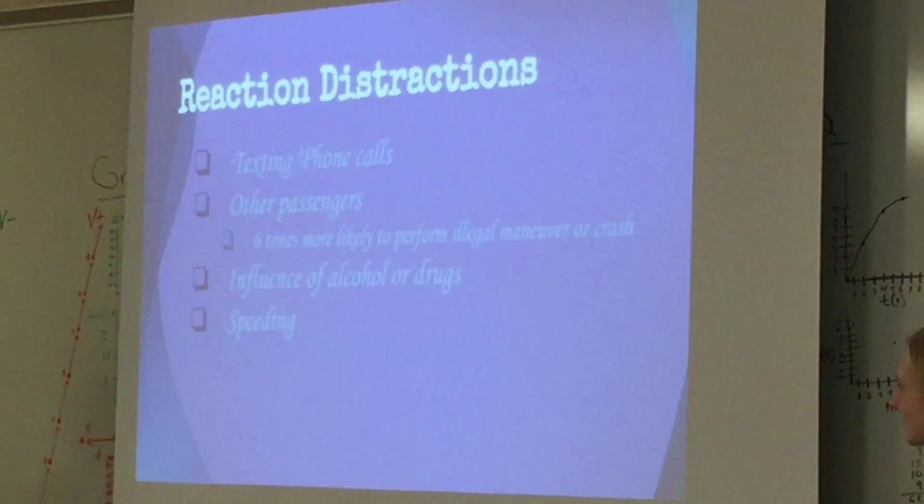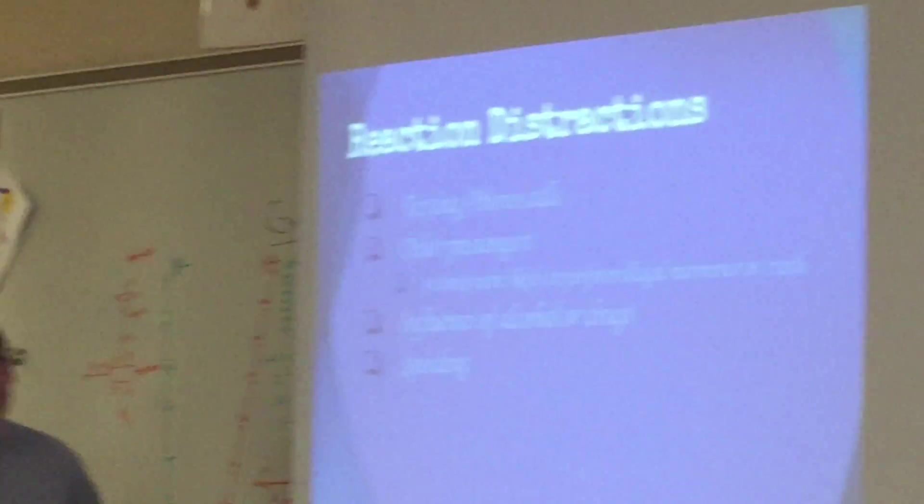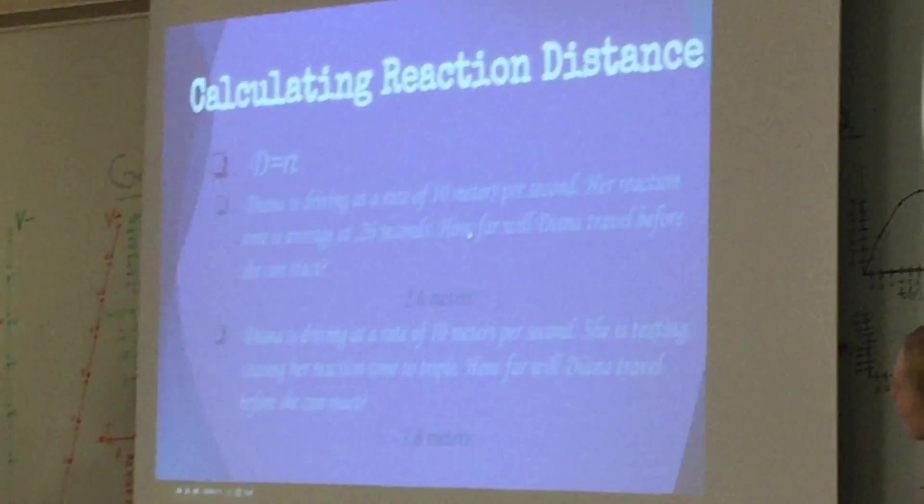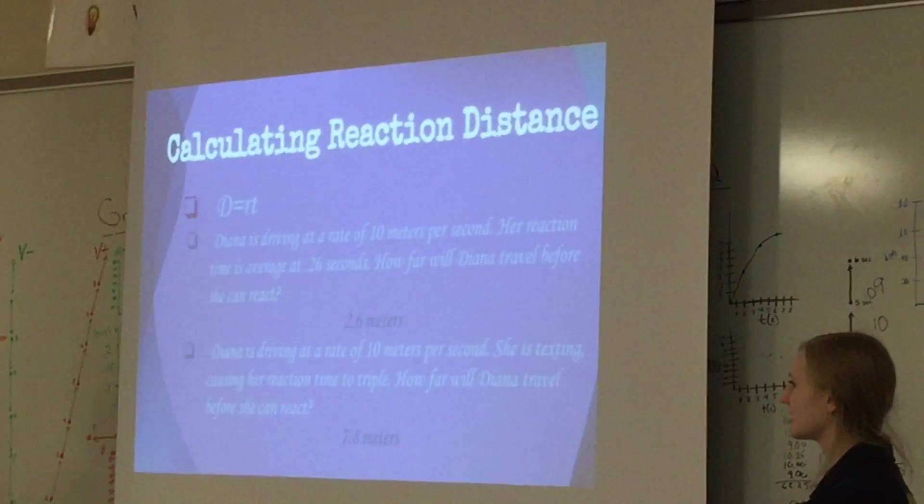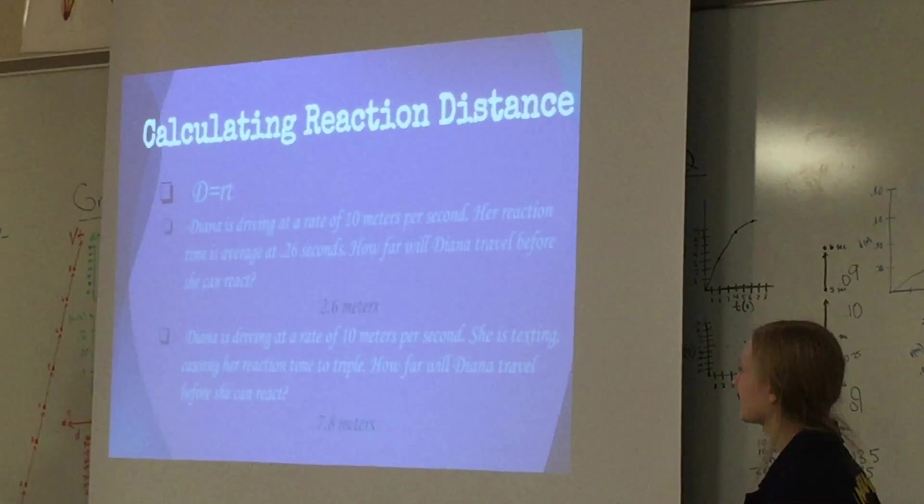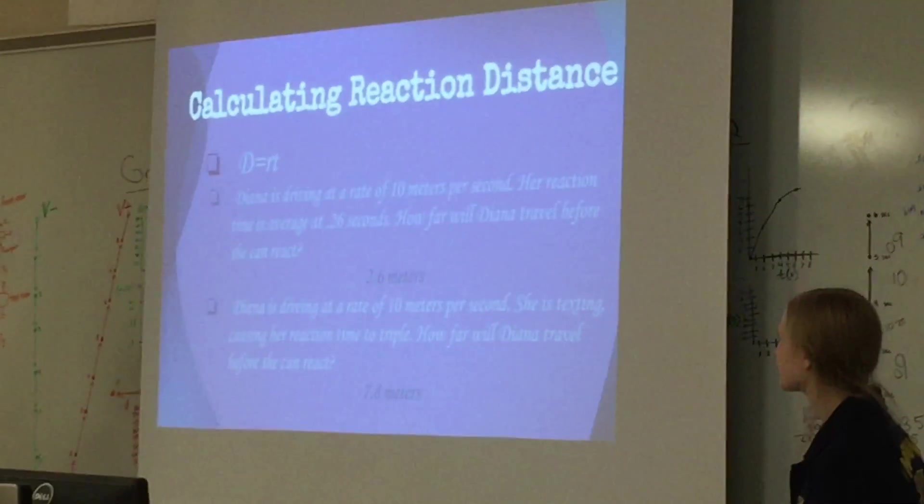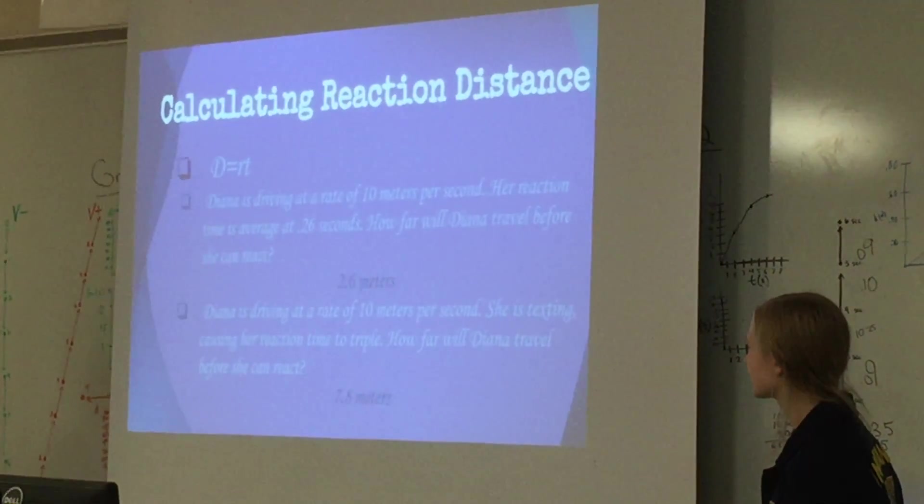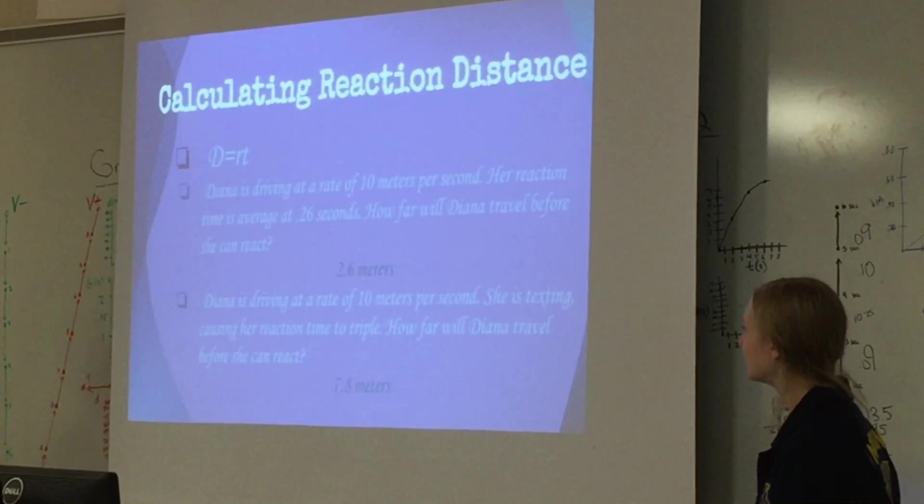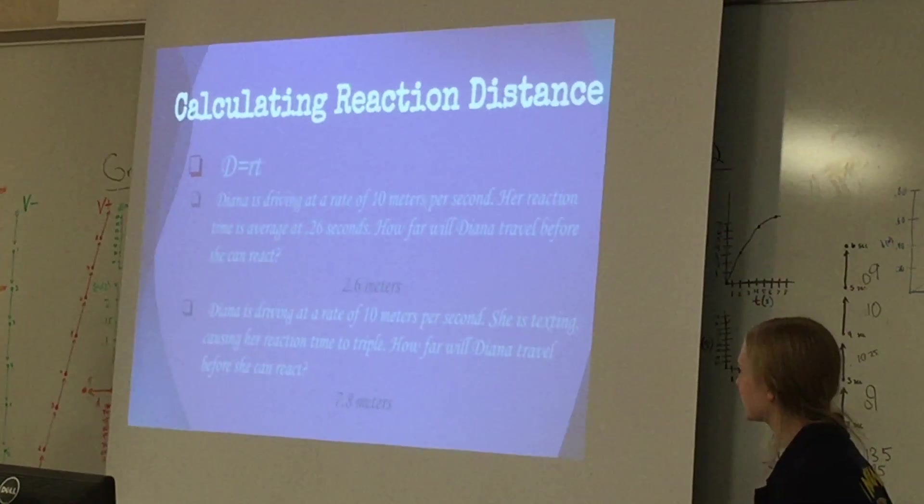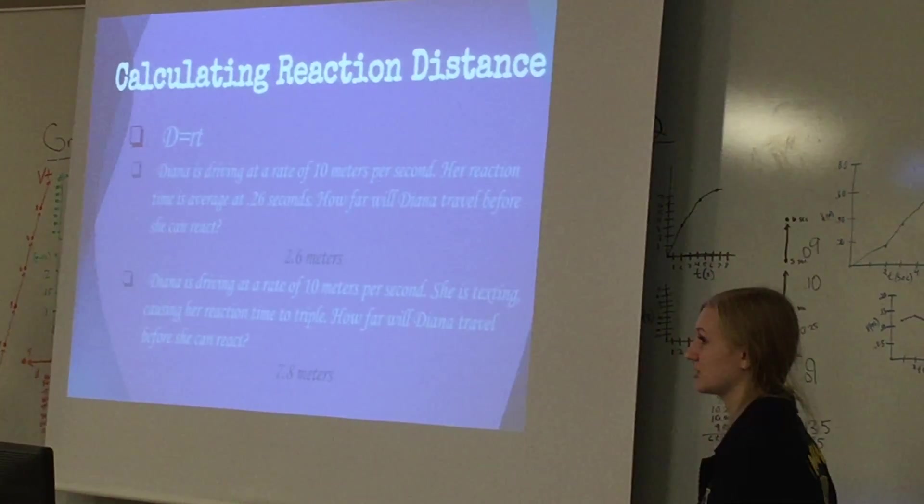The influence of alcohol or drugs also contributes to higher reaction times and speeding. When calculating the reaction distance, reaction distance would be the rate you are traveling times the time you react. An example would be Diana is driving at a rate of 10 meters per second. Her reaction time at average is 0.26 seconds. How far will Diana travel before she can react? 2.6 meters. An example of distracted driving would be if she were texting, causing her reaction time to triple. How far Diana will travel will be much greater.